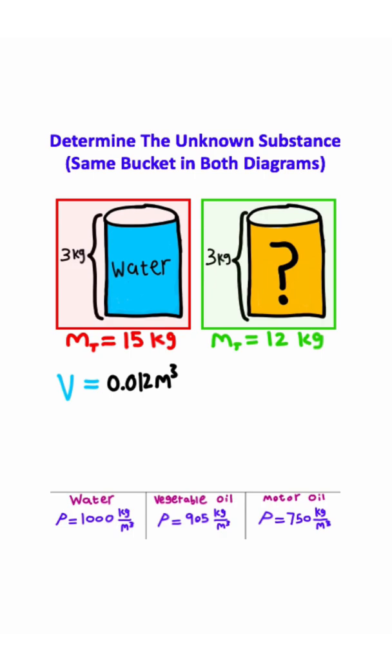Now I have the volume of the entire bucket, which I can use for calculating the density of this other substance. I can take the volume and plug it in right here, and then the mass, I can take this 12 and subtract off this 3, which will give me 9.